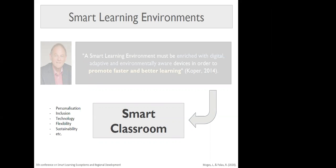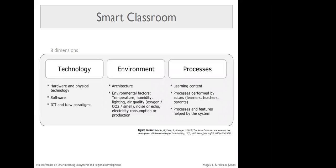From our work, we differentiate three different dimensions of smart classrooms. In the smart classroom, there must coexist technology, the environment, and processes. Through technology — from the most basic devices like laptops or blackboards to cutting-edge technology like artificial intelligence or internet of things — we can help learning processes happen in the classroom. But it's very important to take into consideration the second dimension, which is the environment. This includes architecture and environmental factors in the classroom itself, like temperature, humidity, lighting, air quality, and so on.